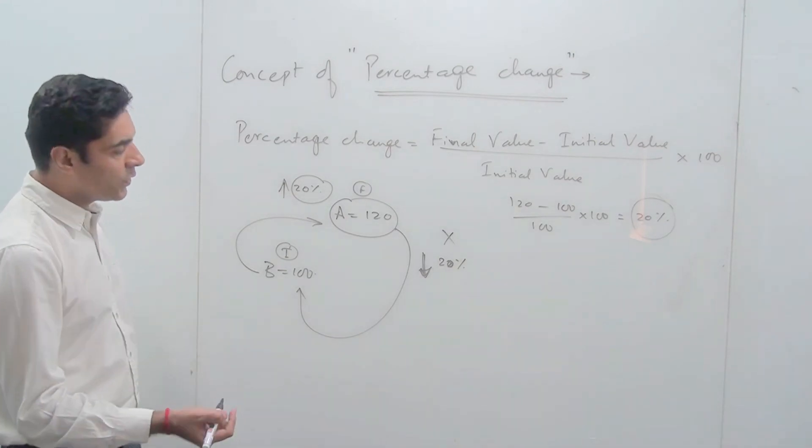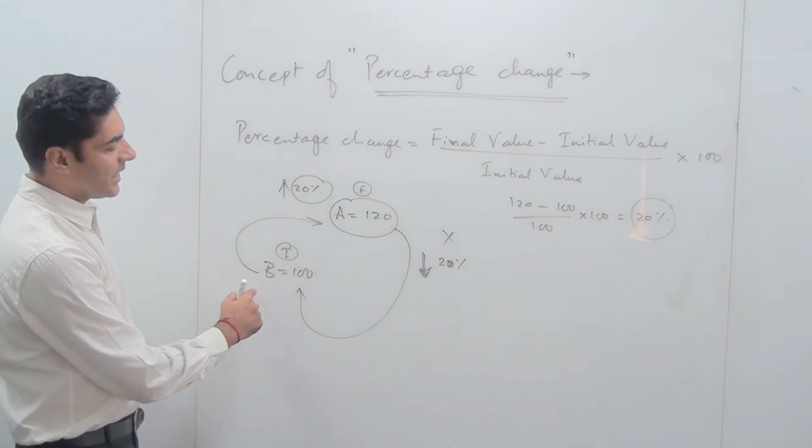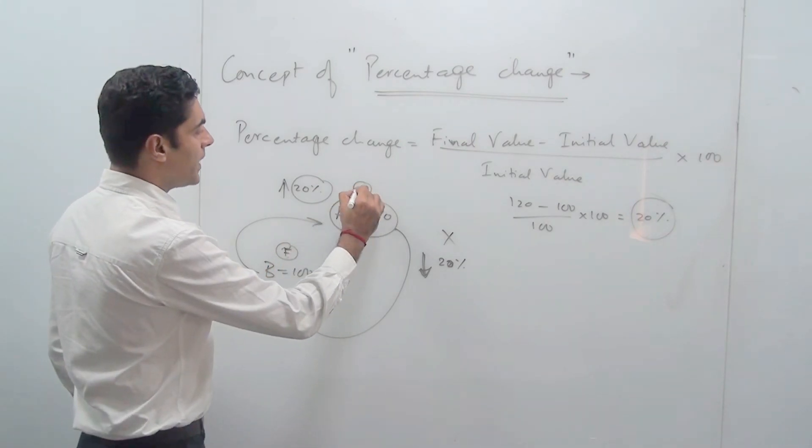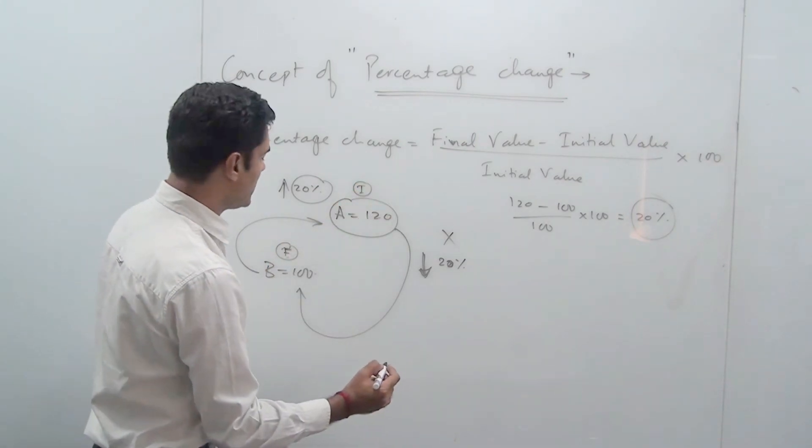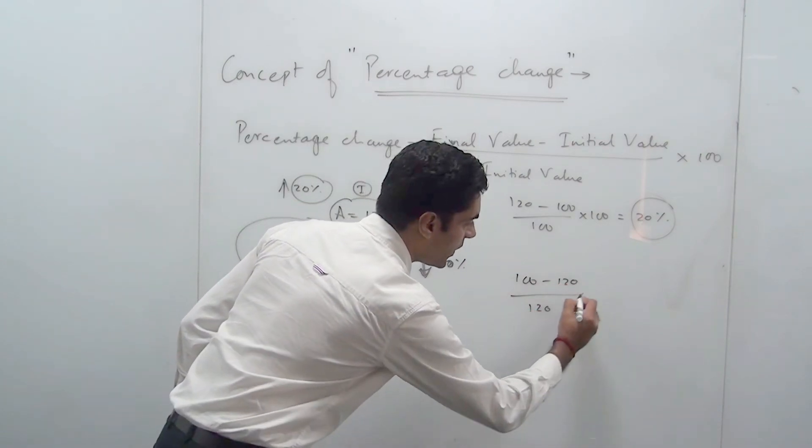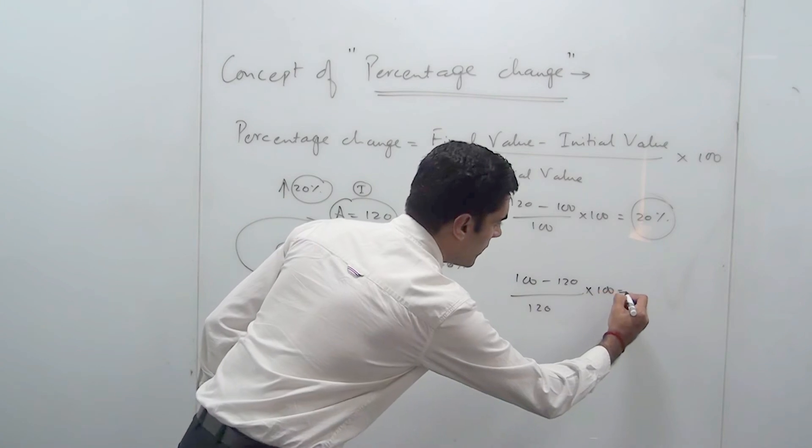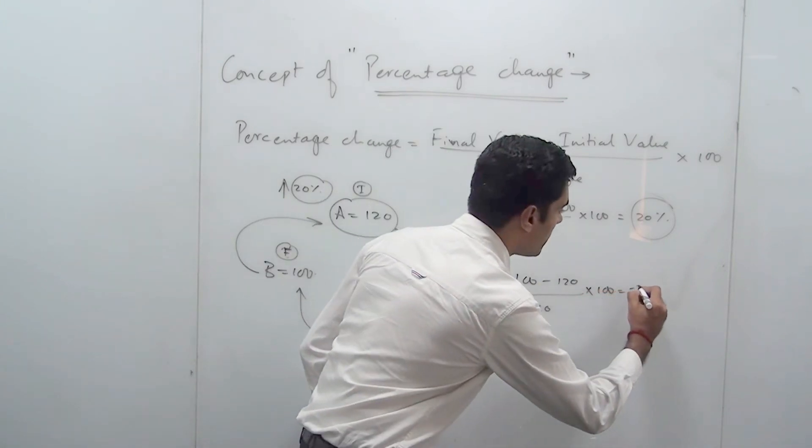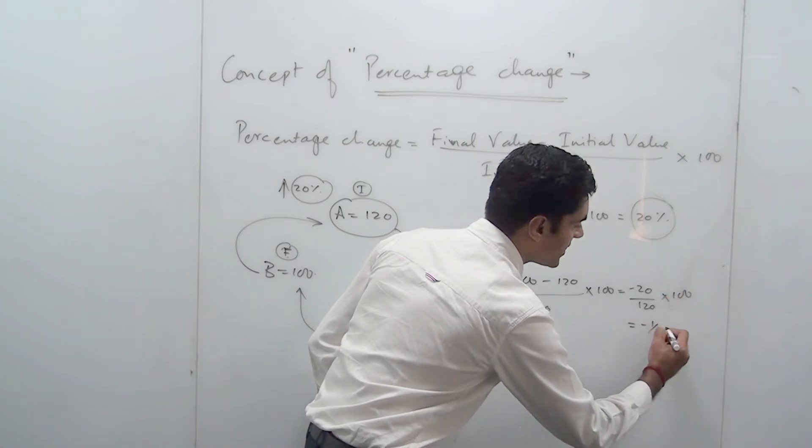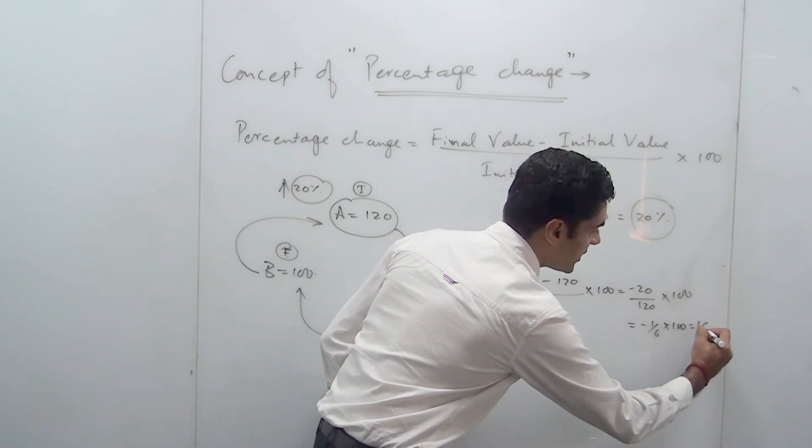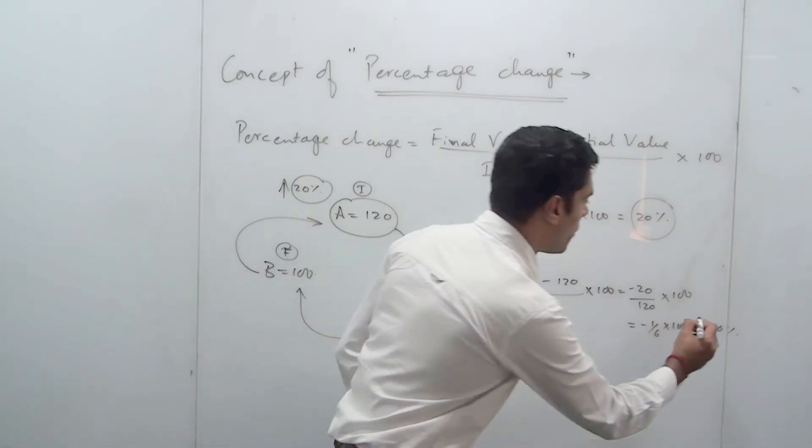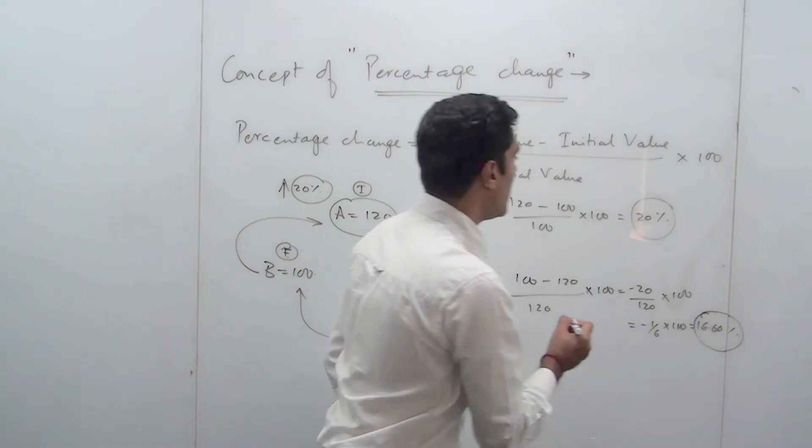But when I asked you B is how much percent less than A, then B becomes my final value and A becomes my initial value. If I put this into it, it's going to be 100 minus 120 divided by initial value which is 120 into 100. If you solve this you will get minus 20 by 120 into 100, which is nothing but minus 1 by 6 into 100, which is 16.66%.